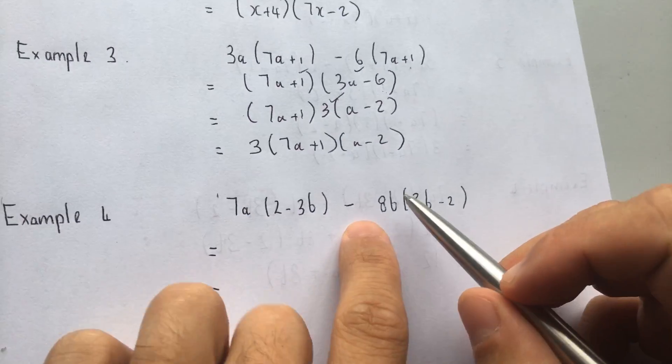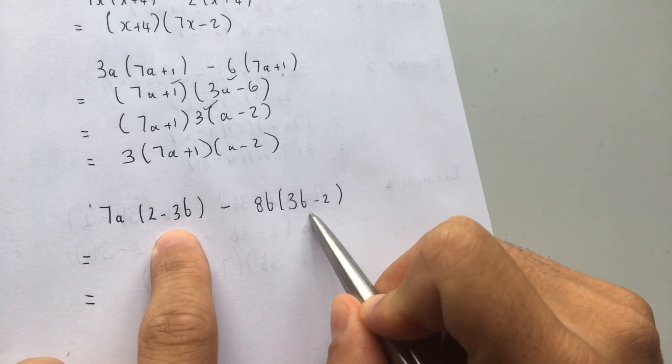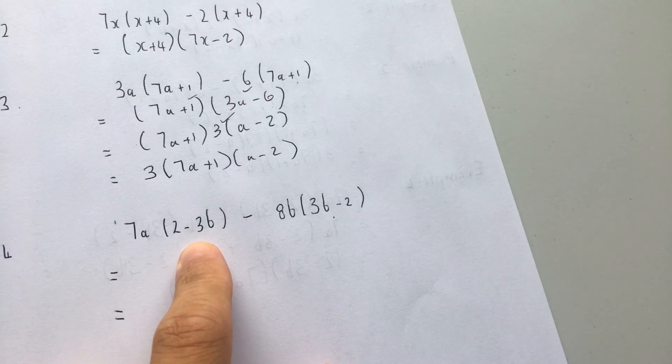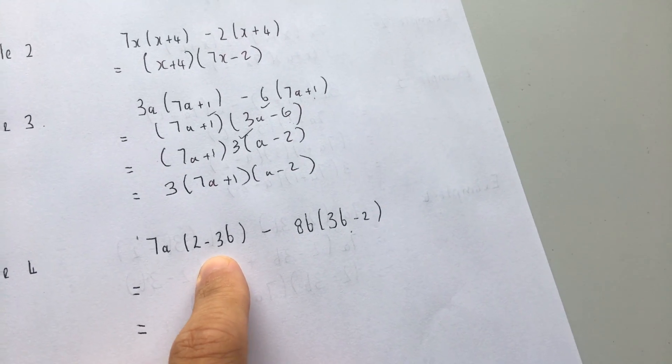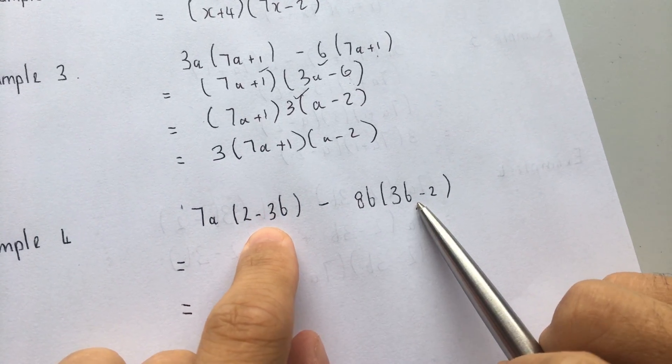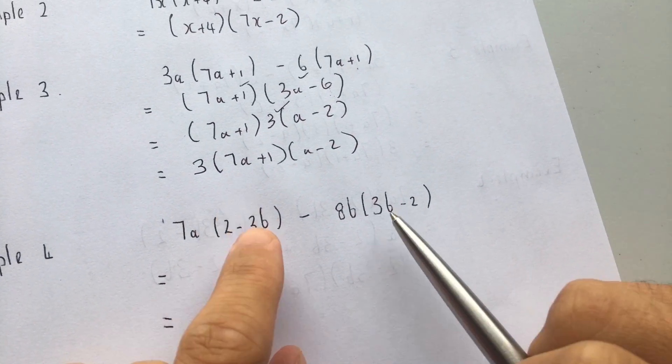Here's a very difficult one. This is called the sign change rule. Do you see these two brackets over here? Do you see that these two brackets over here? They're the same, but the signs are different.